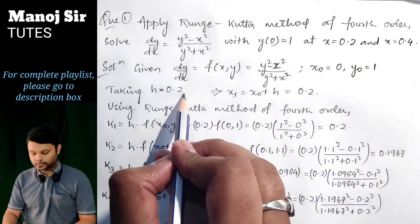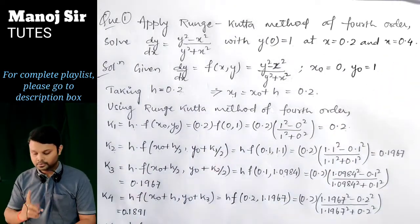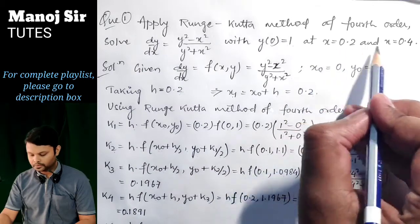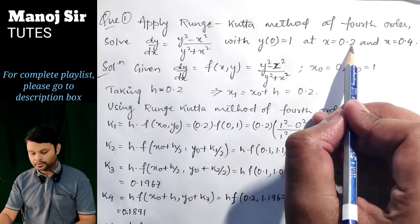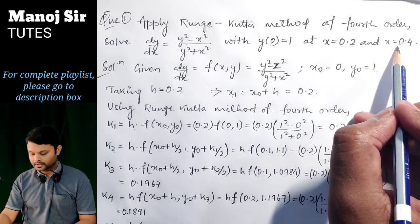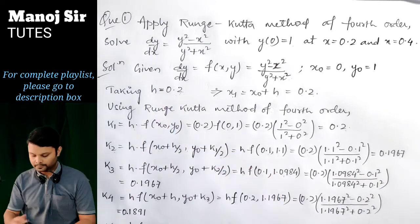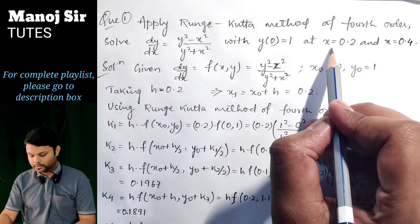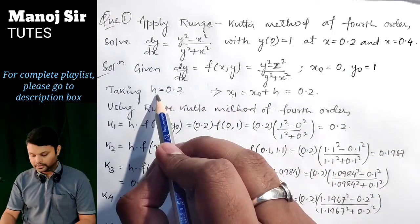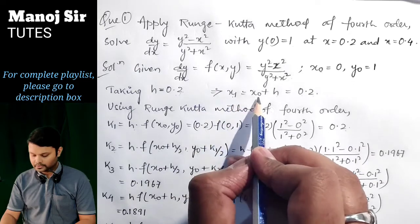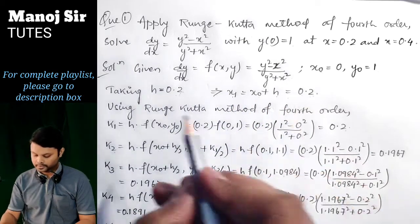We take h = 0.2 because in the first step we get y at x = 0.2, and in the second step we get y at x = 0.4. If instead the required values were x = 0.2 and x = 0.3, we would take h = 0.1. Since we have x = 0.2 and x = 0.4, we use h = 0.2. So x₁ = x₀ + h = 0 + 0.2 = 0.2.